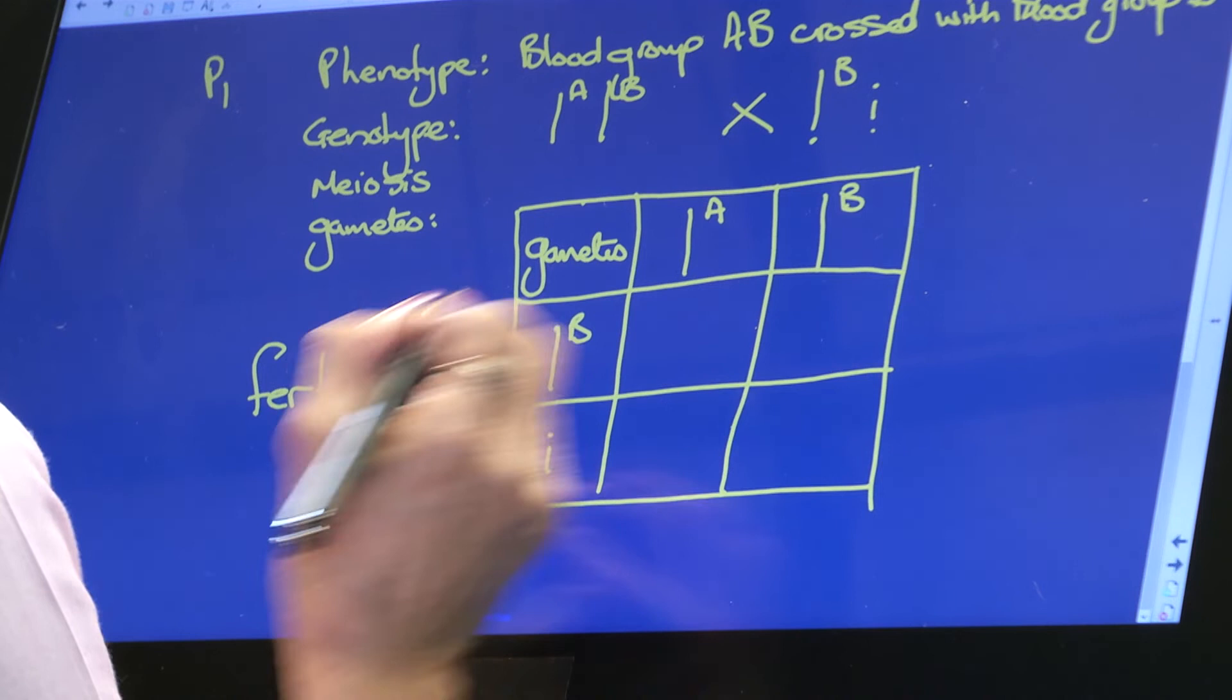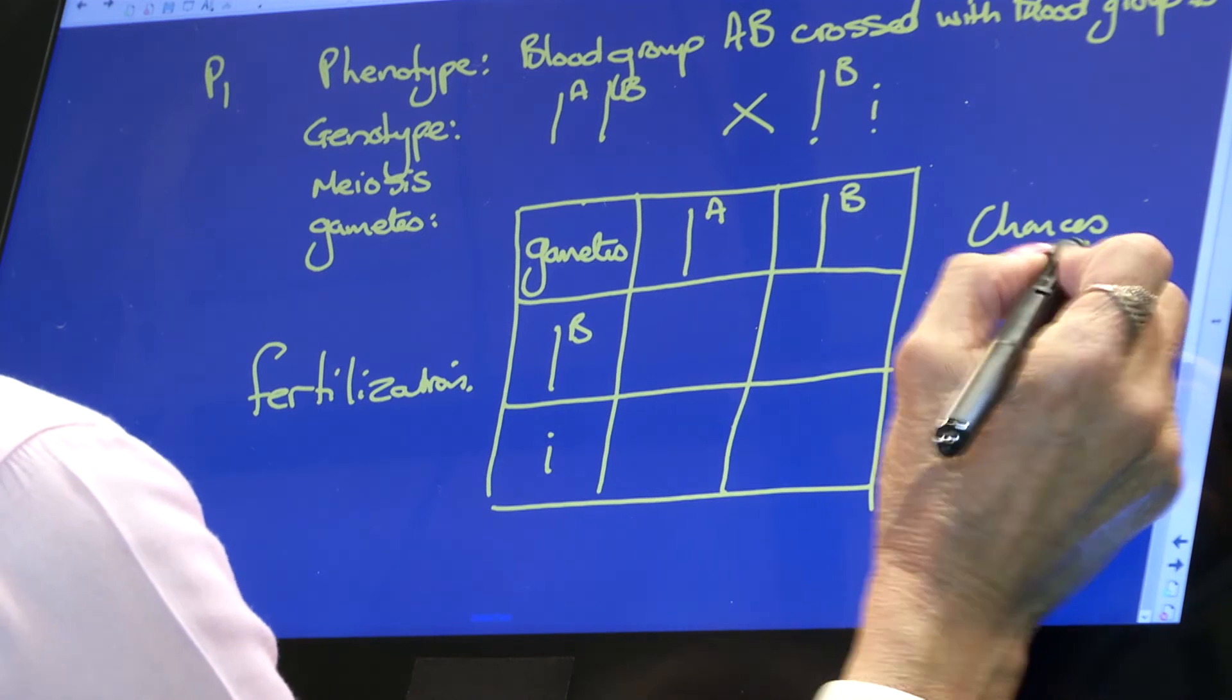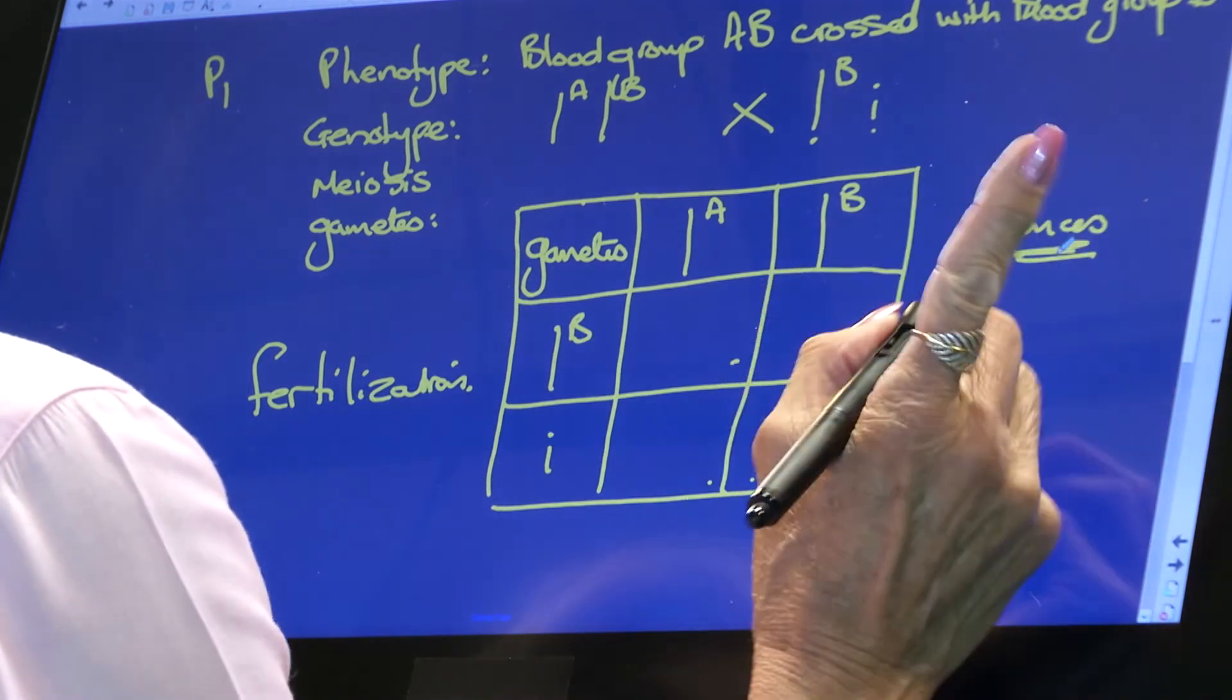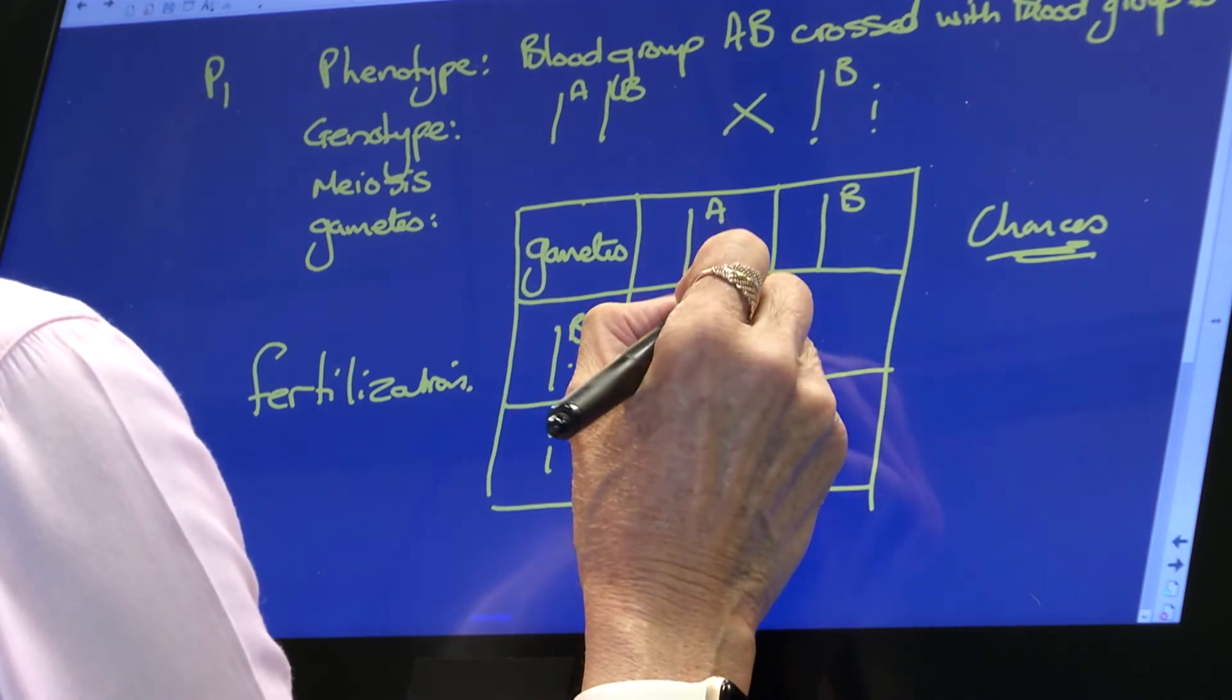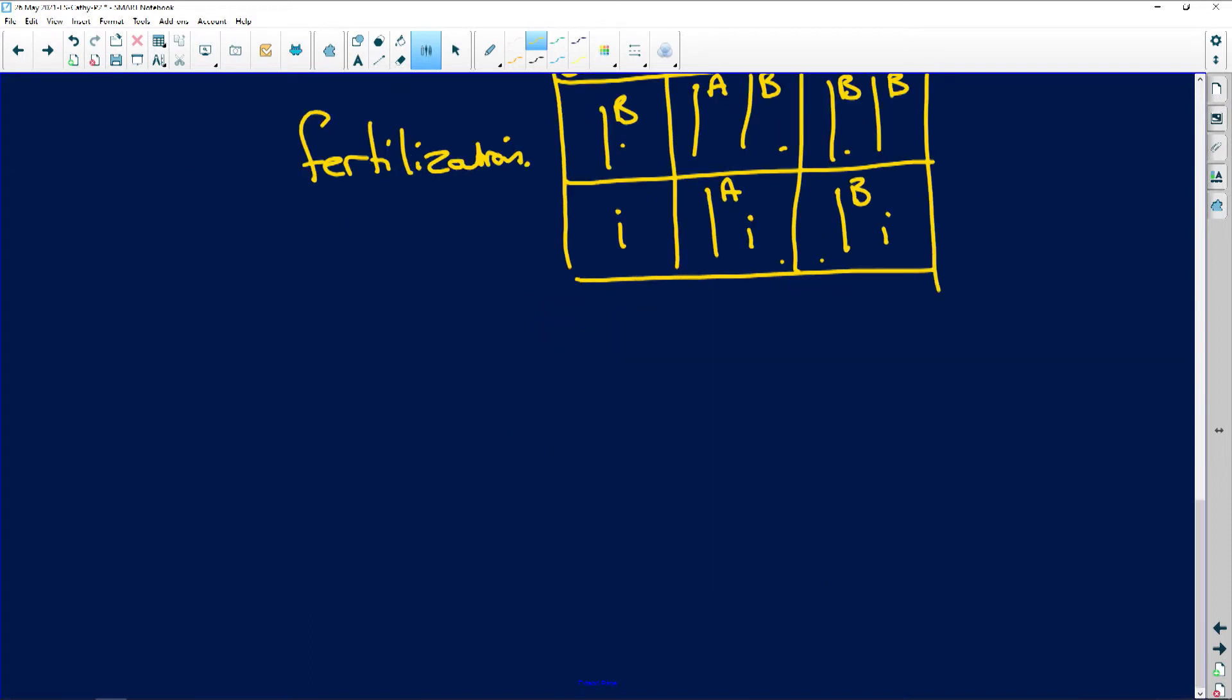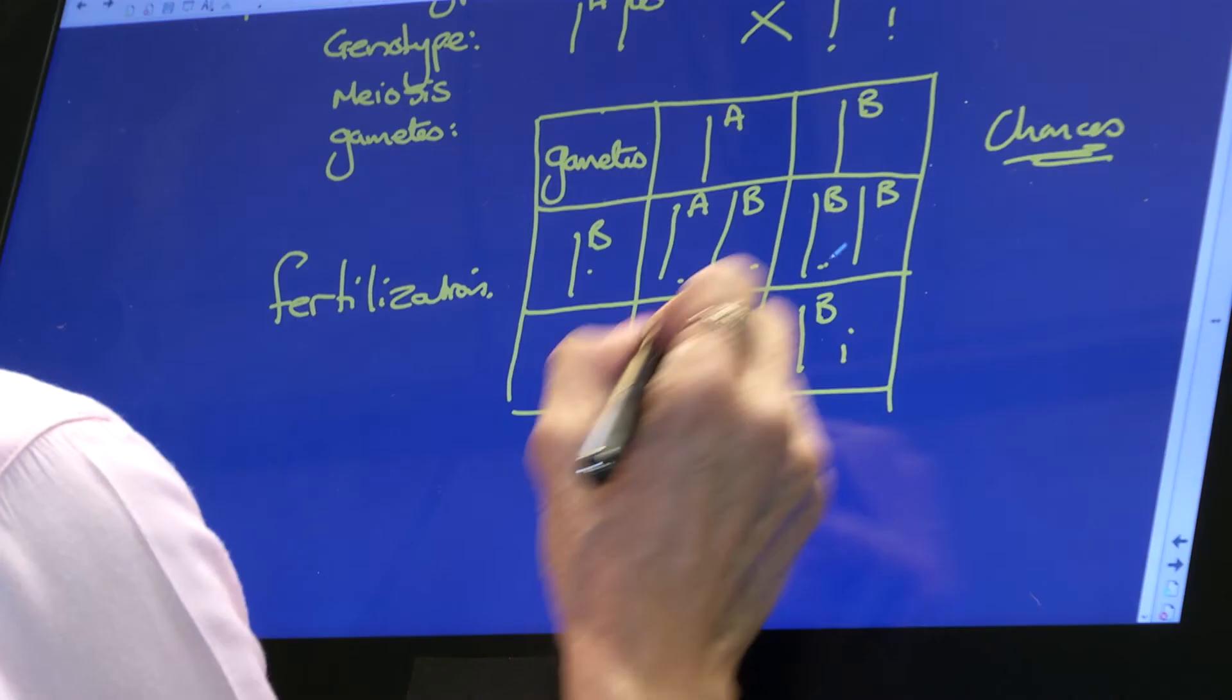And remember please, that these are all chances. So the offspring can be any one of these combinations every single time fertilisation takes place. So here we have A crossed with B, so that's allele AB, and here we have allele B and allele B, and here we have allele A and I, and here we have allele B and I. So as you can see here, there are four different genetic makeups.